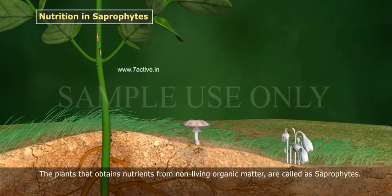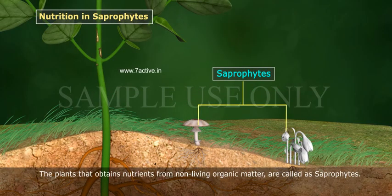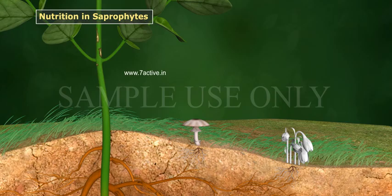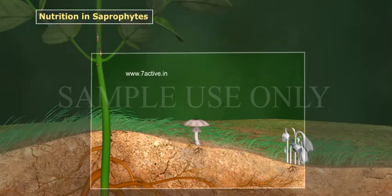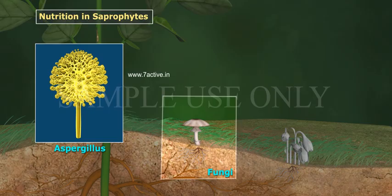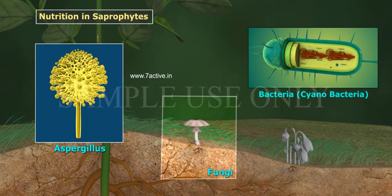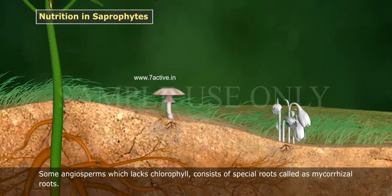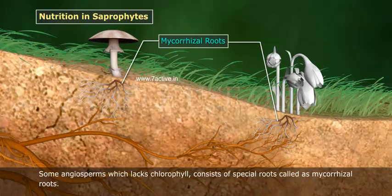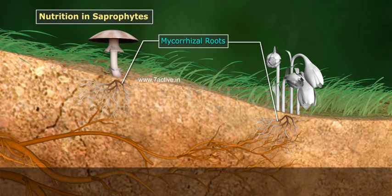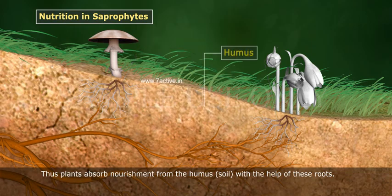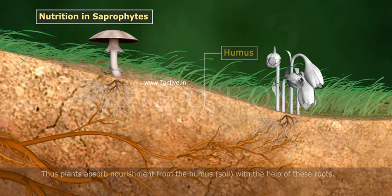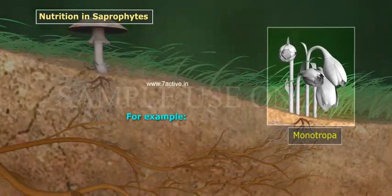The plants that obtain nutrients from non-living organic matter are called saprophytes. Some angiosperms which lack chlorophyll consist of special roots called mycorrhizal roots. Through these roots, plants absorb nourishment from the humus in the soil. For example, the plant Monotropa.